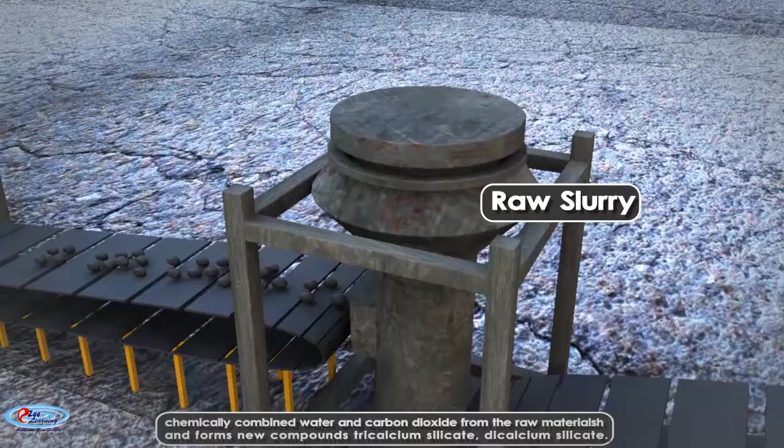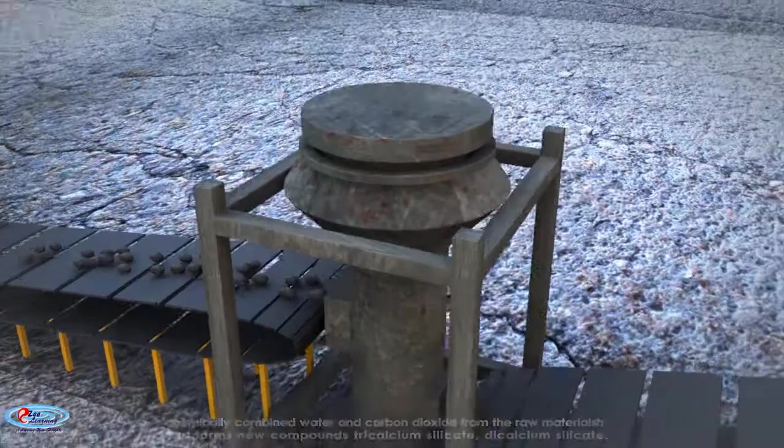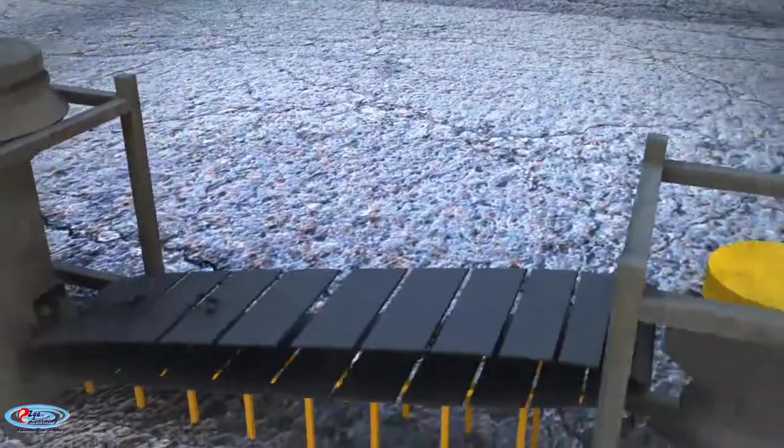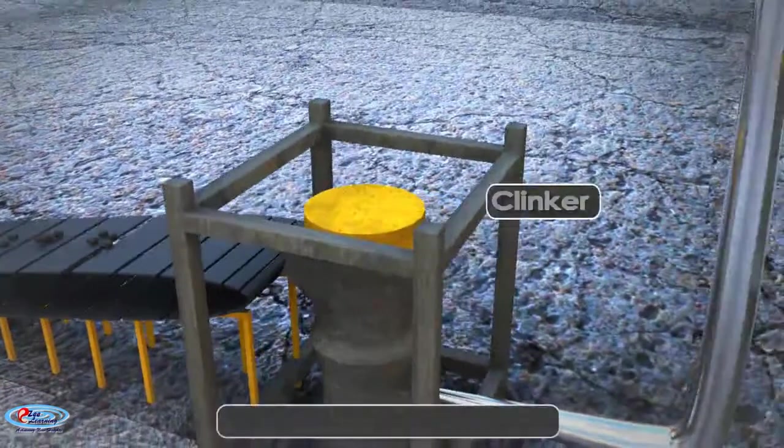Tricalcium silicate, dicalcium silicate, calcium aluminate and tricalcium aluminoferrite. For each ton of material that goes into the feed end of the kiln, two-thirds of a ton then comes out the discharge end, called clinker.